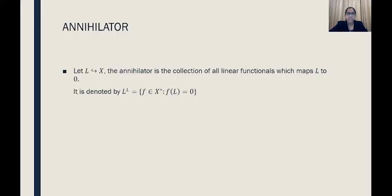The definition is as follows: let L be a subspace of the normed space X. Then the annihilator is the collection of all linear functionals that maps L to zero. In set notation it is the set of all f element of X star such that f of L is zero. It is denoted by L-perp or L-orthogonal.